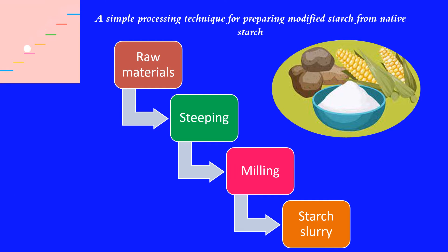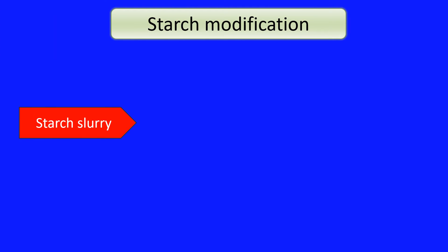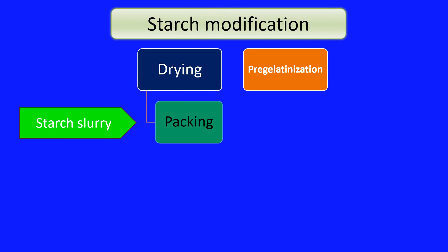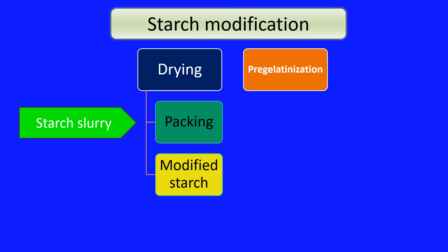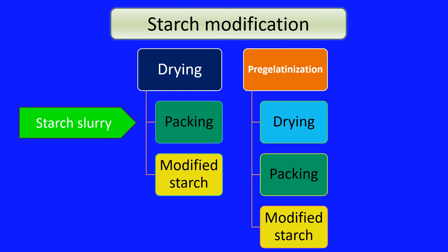This is a simple processing technique for preparing modified starch from native starch. Raw materials could be starchy roots, vegetables, or corn. The starches are steeped in water, subjected to a milling process, and a slurry of starch is obtained. This slurry is then subjected to a drying process and packed. Alternatively, a pre-gelatinization process also allows drying and packing to obtain the modified starch.